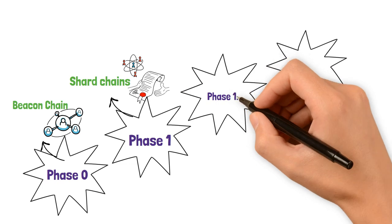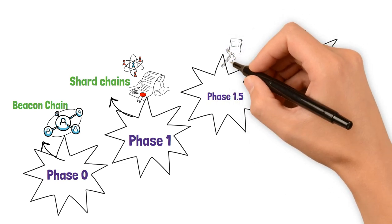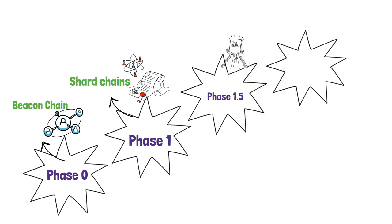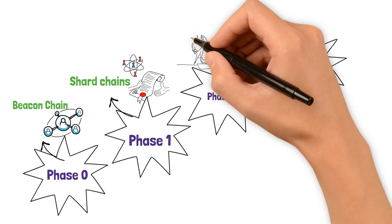Phase 1.5 is a crucial step in the Ethereum 2.0 roadmap. It involves merging the existing Ethereum 1.0 chain with Ethereum 2.0, ensuring a smooth transition for existing applications and users.